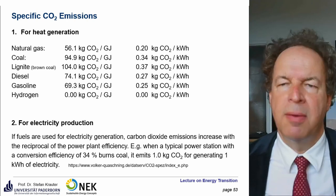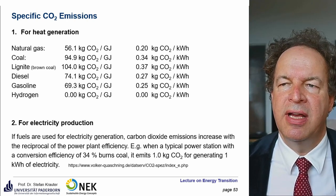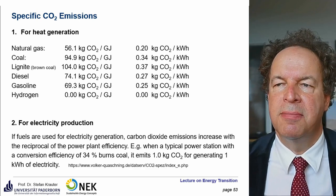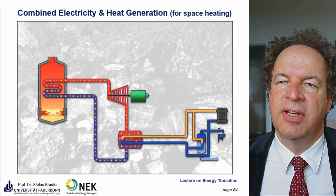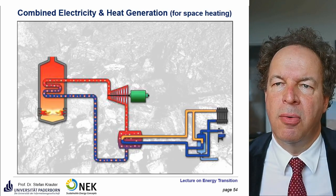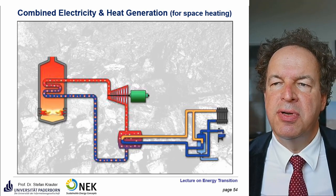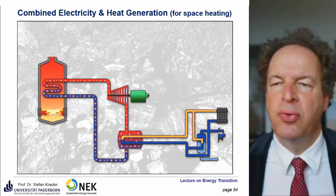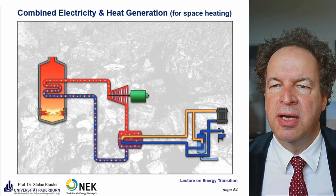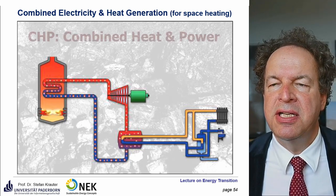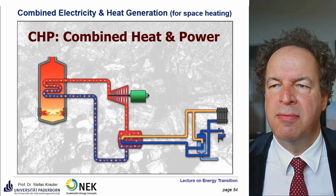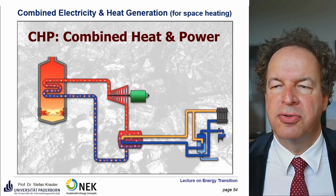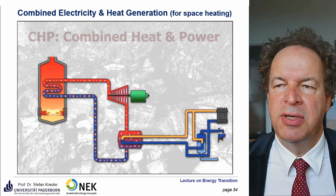For electricity generation, as mentioned, we multiply CO2 emissions by a factor of about three. Combined electricity and heat generation (CHP) increases total efficiency, but requires a heat consumer. That's no problem in winter when many houses need heating, but in summer that's a problem — what do you do with the waste heat? The turbine and electricity are always needed, but heat may only have a consumer during winter.